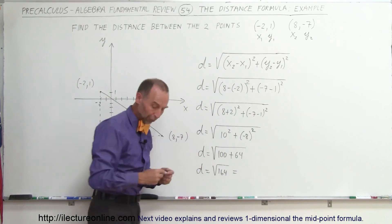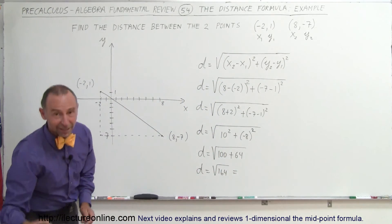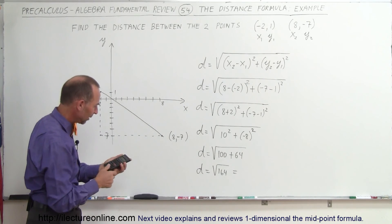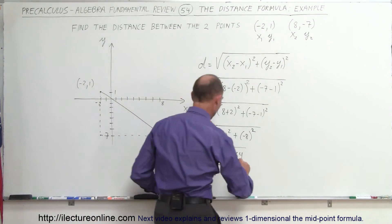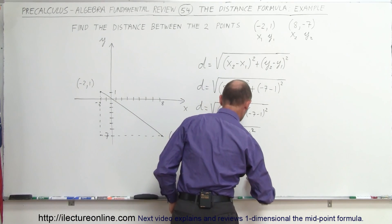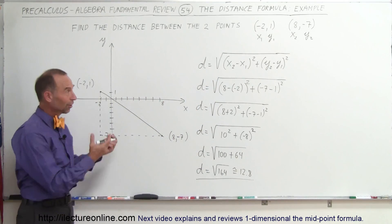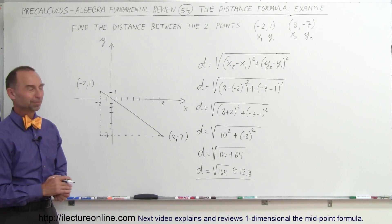If you want to know the exact number, we're going to need a calculator. So we take 164, take the square root, and we get 12.8 approximately. So that's approximately 12.8. And that's how we find the distance between two points using the distance formula.